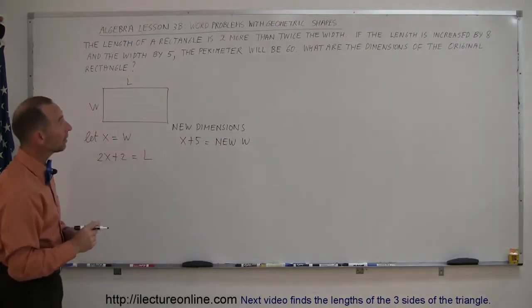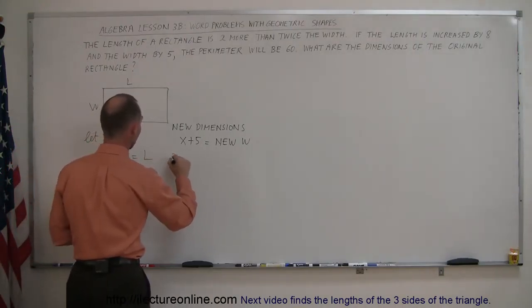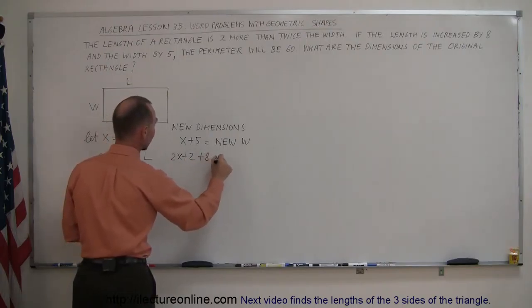And then the length is increased by eight. So that means 2x plus two plus eight. 2x plus two, which is the original length, plus eight, which is now the new length.